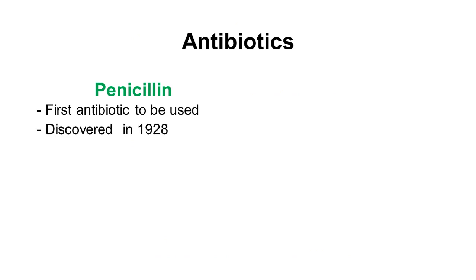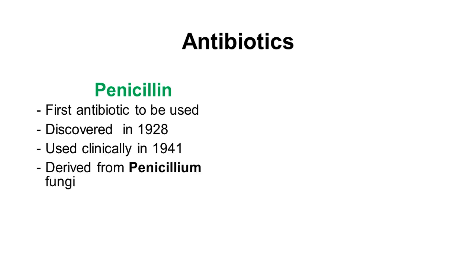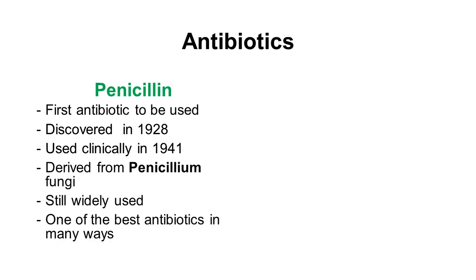Penicillin was the first antibiotic to be used. It was discovered in 1928 and used clinically in 1941. Penicillins are derived from penicillium fungi and are still widely used — they are one of the best antibiotics in many ways.